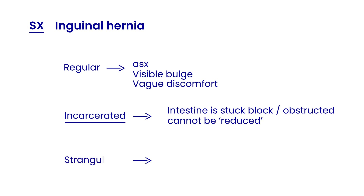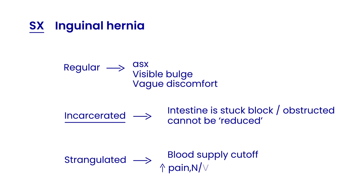The most worrisome is a strangulated hernia, which means the blood supply is cut off. If the blood supply is cut off, the patient presents with increasing pain, nausea, vomiting, and fever. The patient can also have an elevated white blood cell count, indicating some sort of infection or perforation.